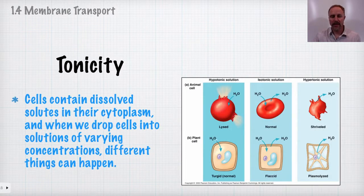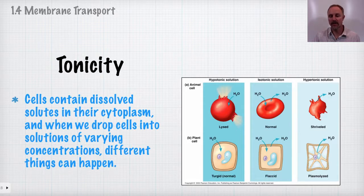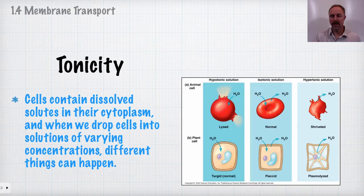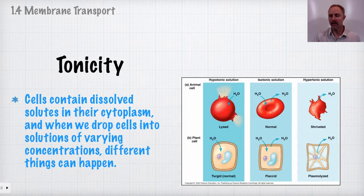Looking at cells placed in different concentrations of solutions: in a hypotonic solution the surroundings contain more water or fewer solutes than the cell, so water moves down its gradient to equilibrate. Since the red blood cell has no cell wall, the cell will burst, whereas a plant cell in the same conditions would be turgid — firm and healthy. In a hypertonic environment, where there are more dissolved solutes outside relative to the cytoplasm, water moves out and the cell shrivels.